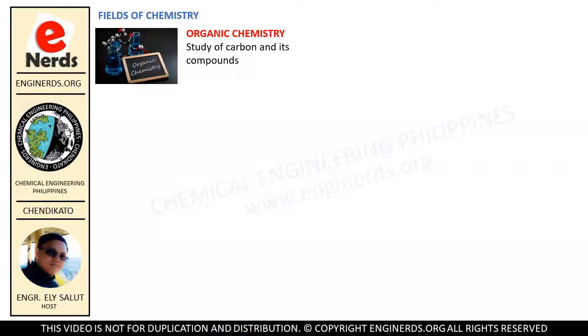Most organic compounds contain carbon and hydrogen, but they may also include any number of other elements such as nitrogen, oxygen, halogens, phosphorus, silicon and sulfur.